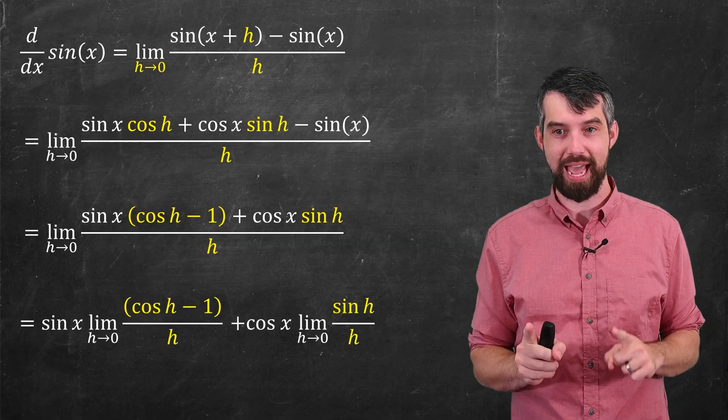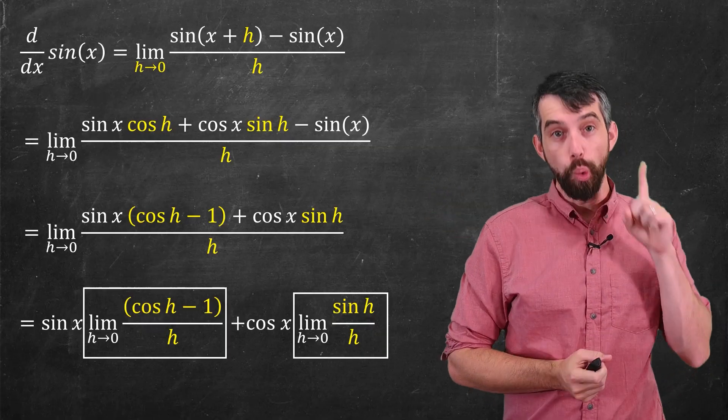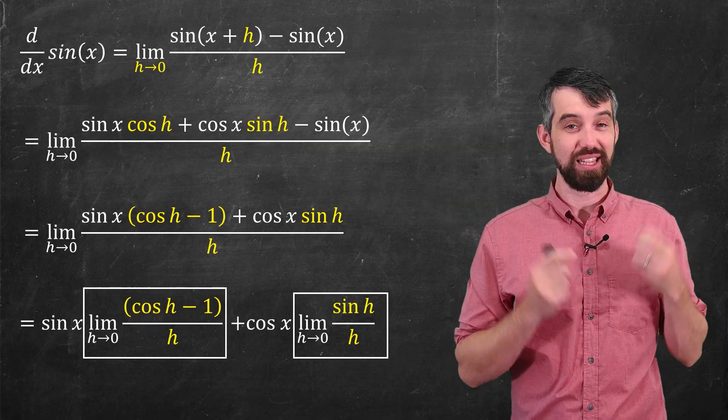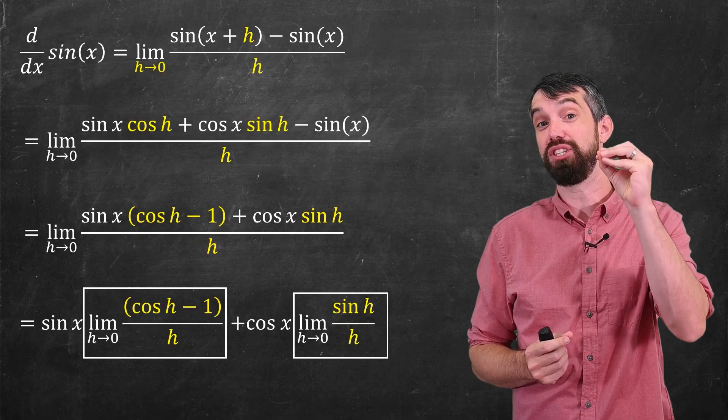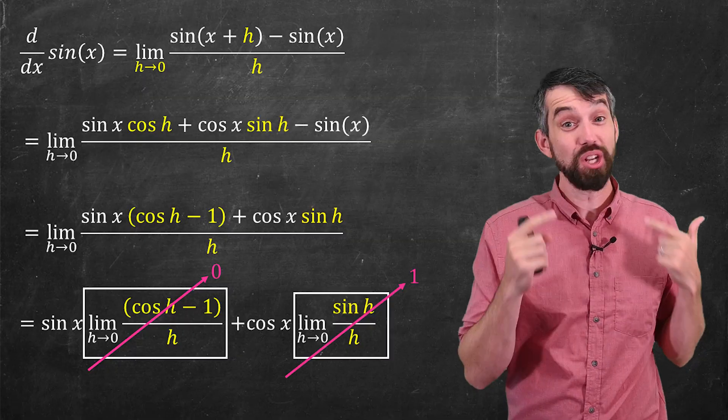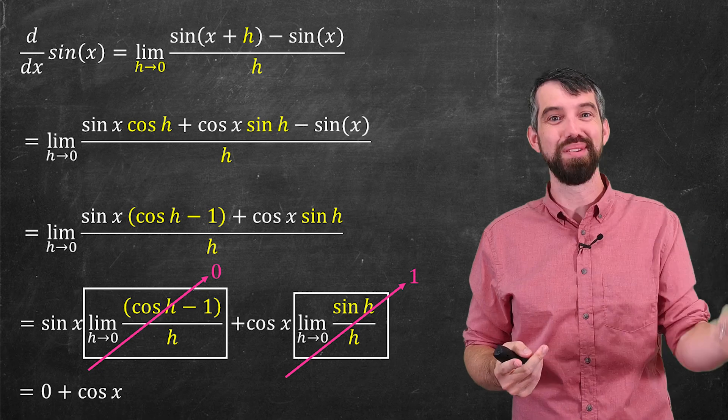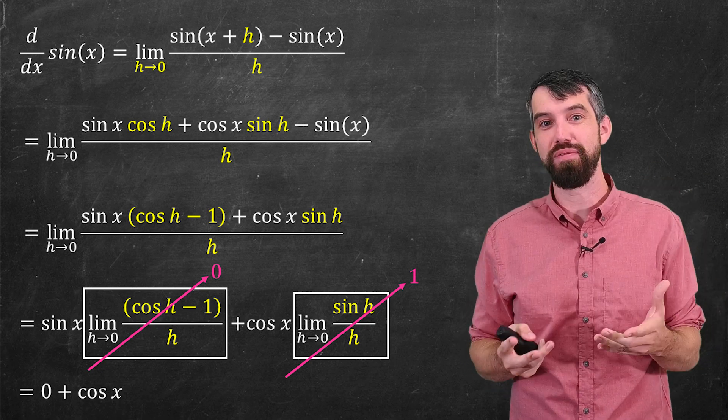I'm then going to separate out these terms, and notice what I get. If I faithfully do this algebra, I get two different limits at the bottom. One of those limits, the one on the right, the limit as h goes to zero of sine of h divided by h is exactly the limit we started with. So until we know the answer to this limit, we can't actually apply L'Hopital's rule and the derivative of sine of x to get the value of this limit.